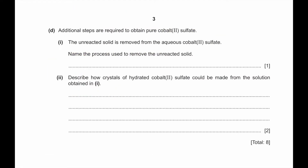Part D: Additional steps are required to obtain pure cobalt 2 sulfate. The unreacted solid is removed from the aqueous cobalt 2 sulfate. Name the process used to remove unreacted solid. To remove unreacted solid, we can do filtration.